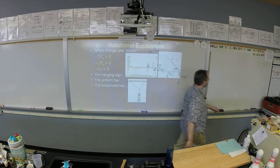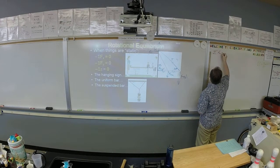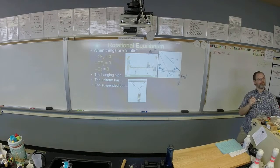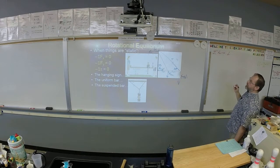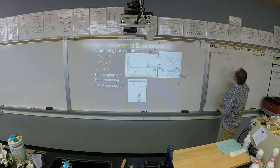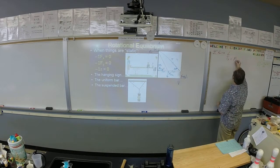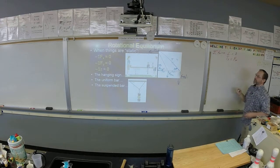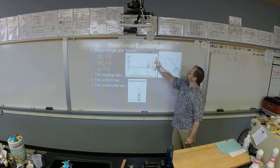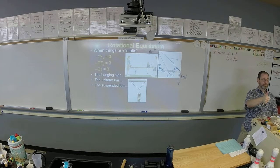So the first thing we need to do now is write down our conditions for equilibrium. First one, let's look at the horizontal forces. Sigma Fx equals zero. What are all the left forces? Tx is pointing to the left and there's only one thing pointing to the right. What's pointing to the right? Fn, where the bar encounters the wall.